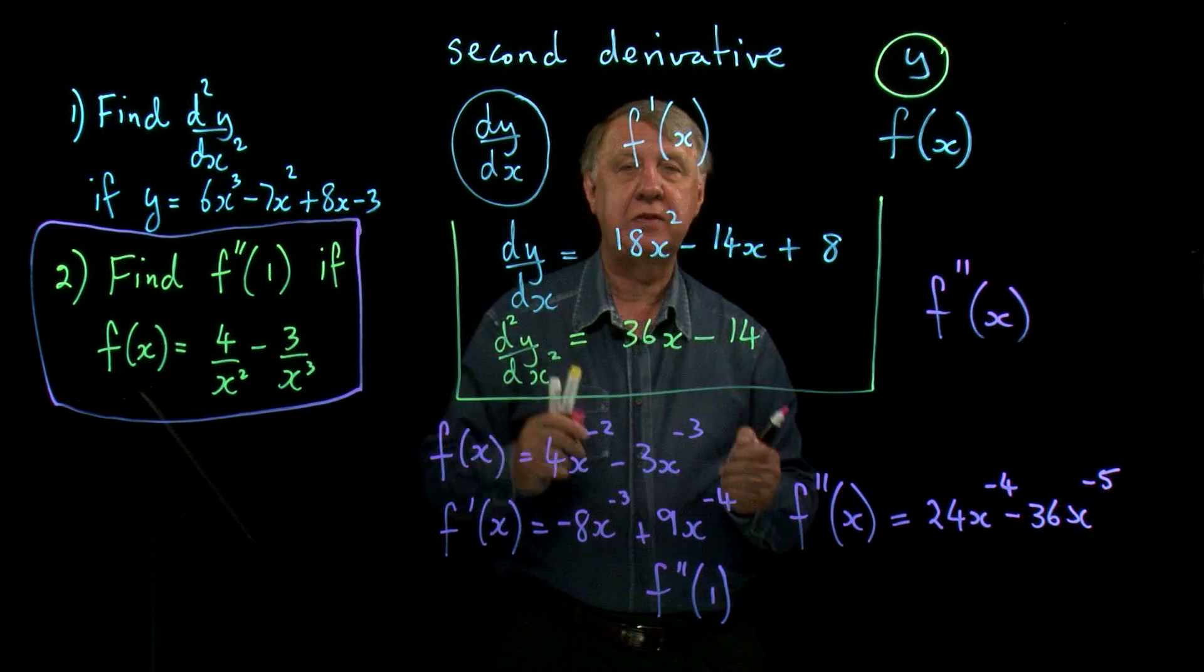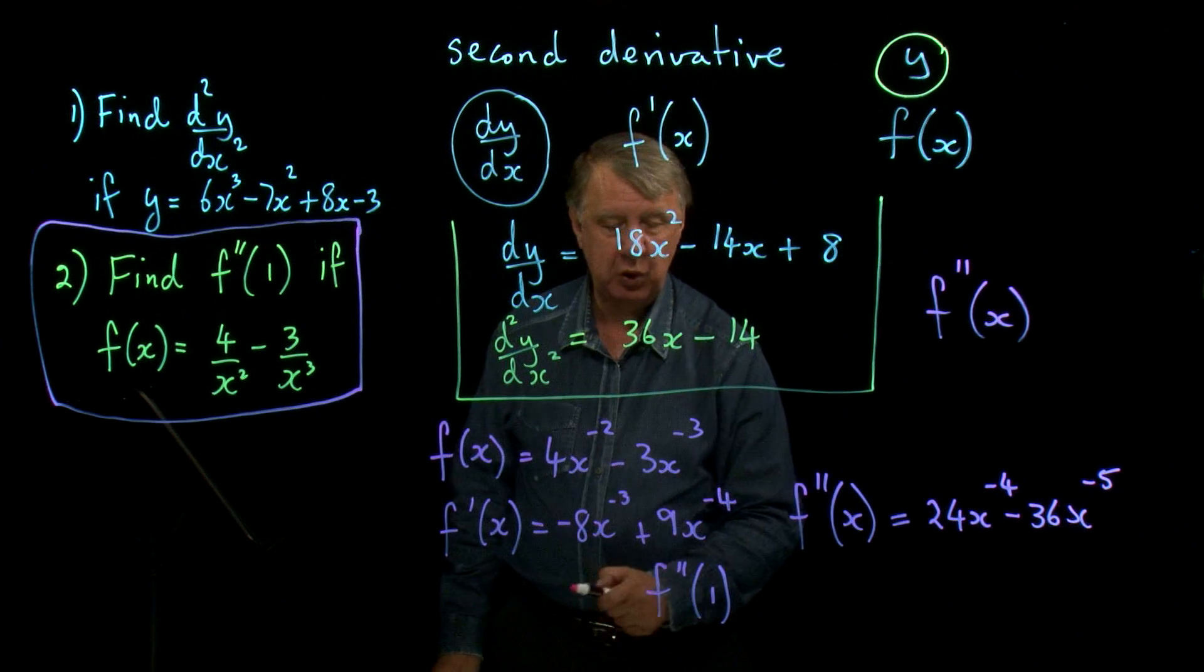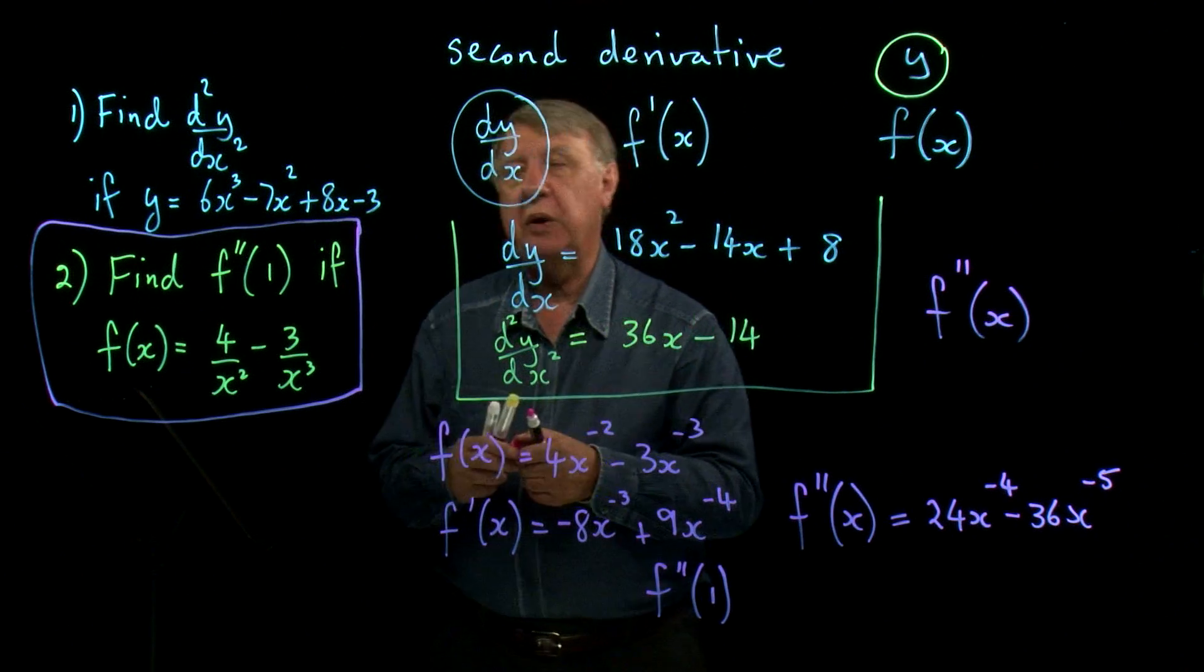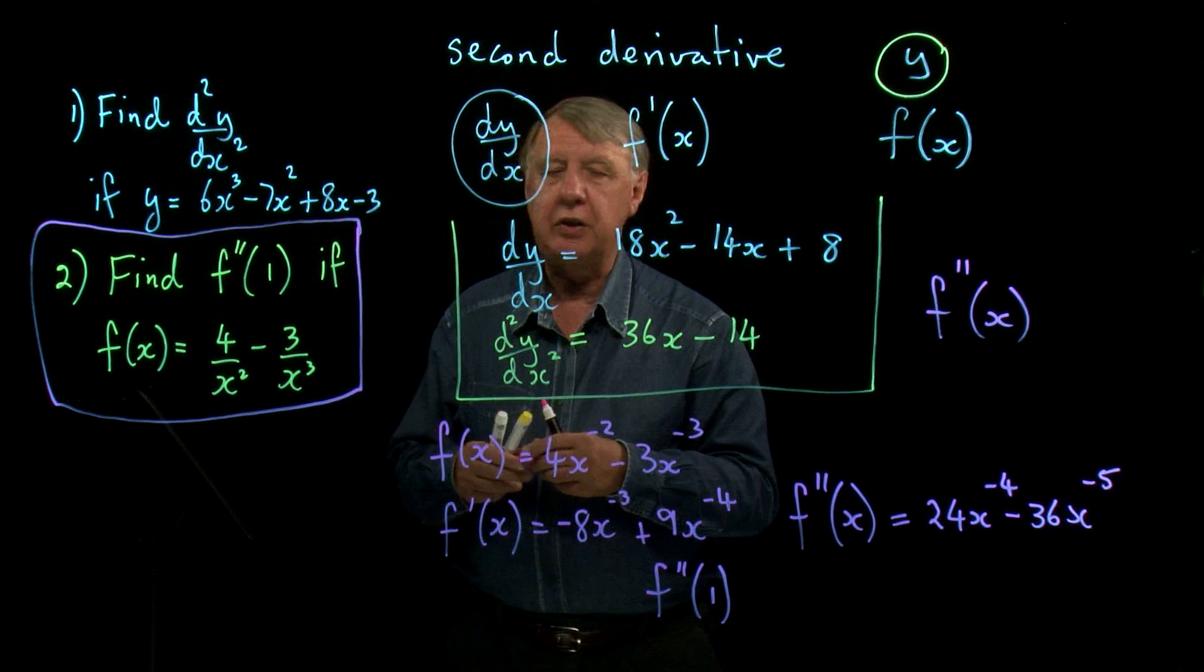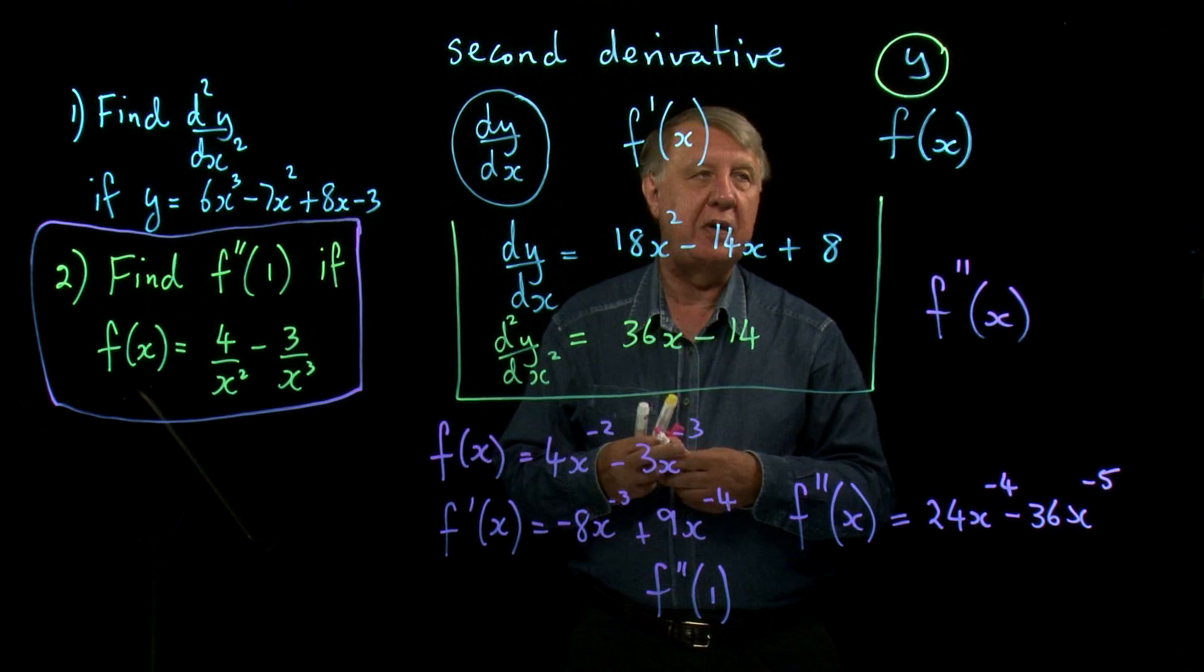Whereas this, f double dashed of 1, represents that whole sentence very quickly. So it's a great notation to use. And that's why it has become so important in modern mathematics.